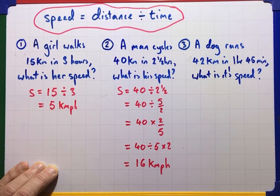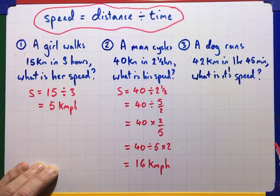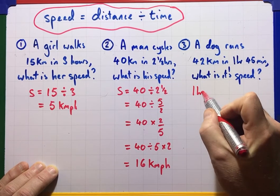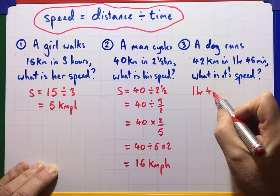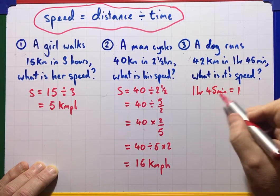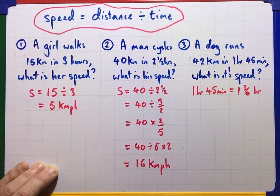Last one we've got here. We've got a dog runs 42 kilometres in 1 hour and 45 minutes. Well, first of all, 1 hour 45 minutes, that is 1 and 45 minutes is 3 quarters of an hour, isn't it? So that's 1 and 3 quarters, 1 and 3 quarter hours.